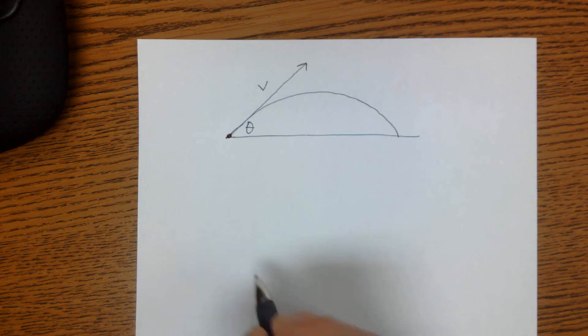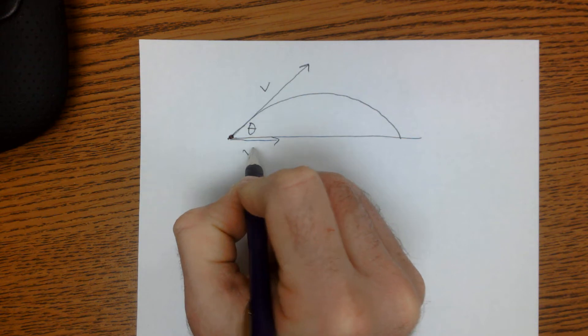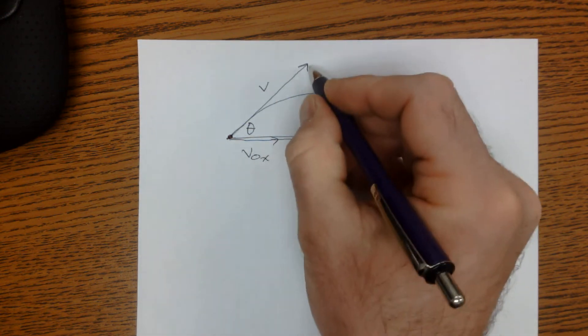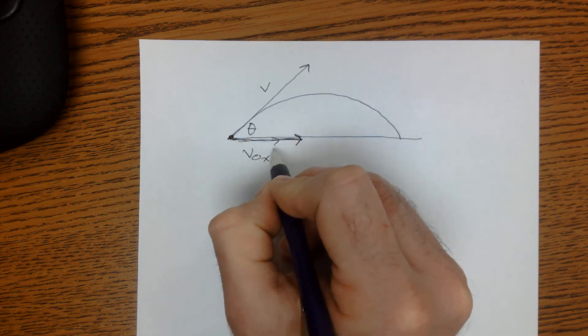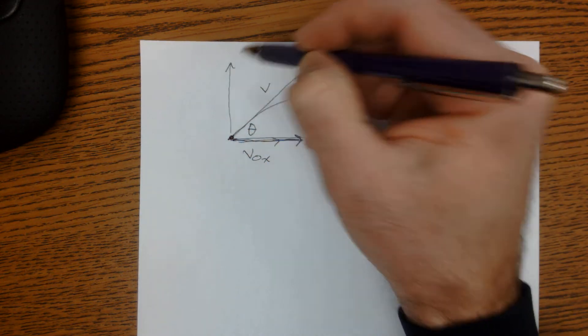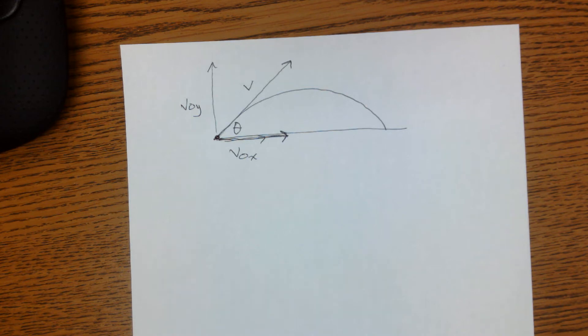What we want to know is the initial velocity in the x direction and the initial velocity in the y direction. So how do we do that?